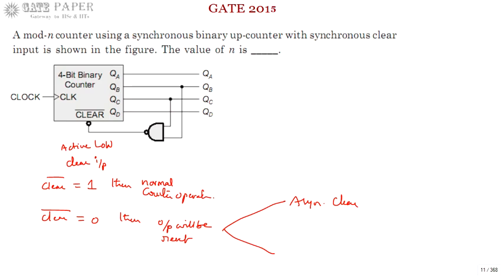When the clear signal (logic 0) is given, it makes the output reset — but whether this happens in synchronous with the clock or not determines the type. Based on that, there are two different types of clearing operations: synchronous clear and asynchronous clear.